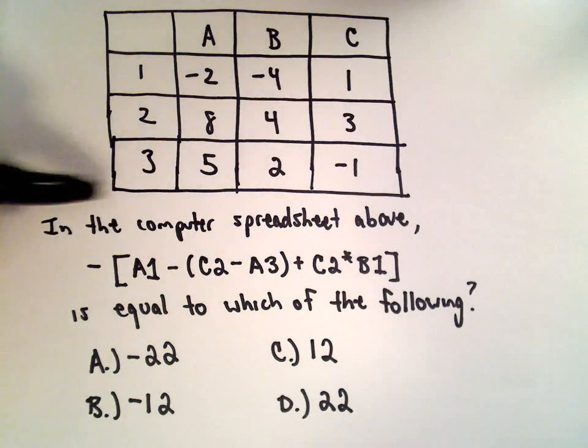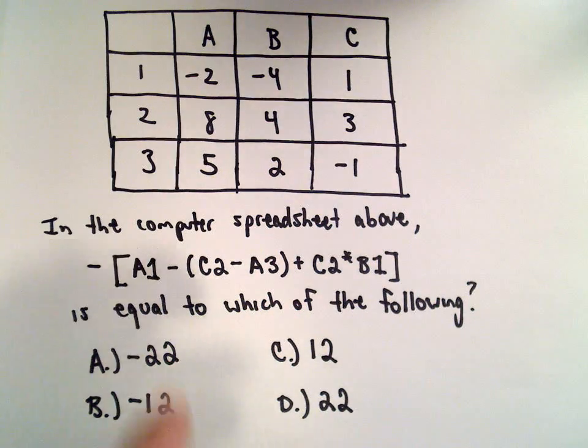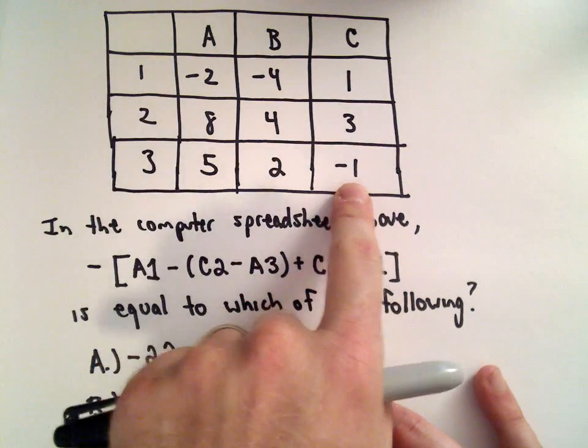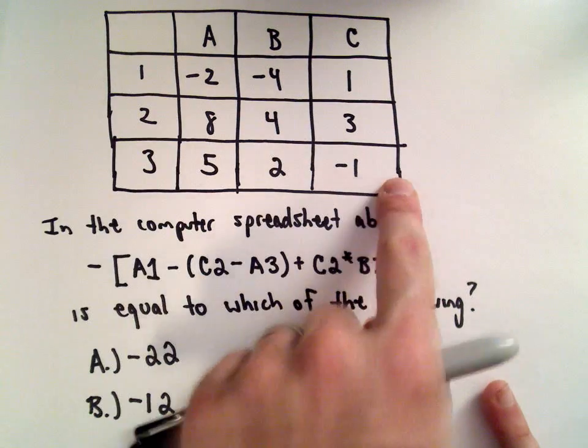So in this problem, they give us a little computer spreadsheet. We've got the columns A, B, C, and we have rows 1, 2, and 3.